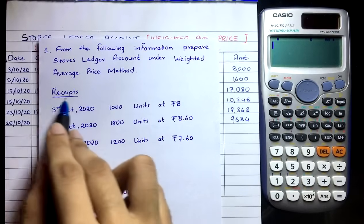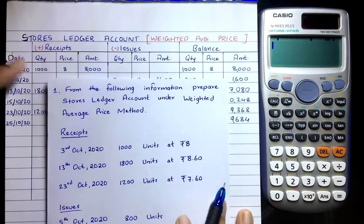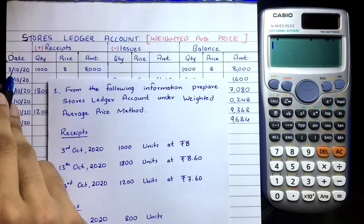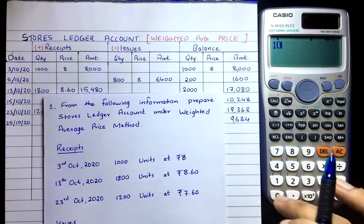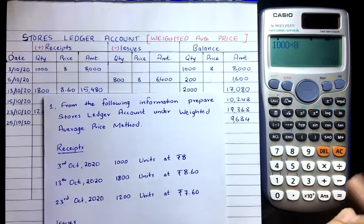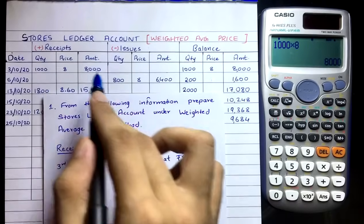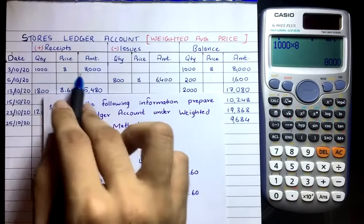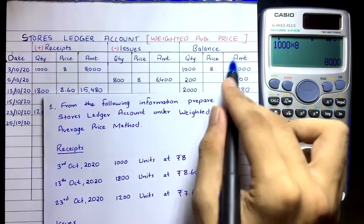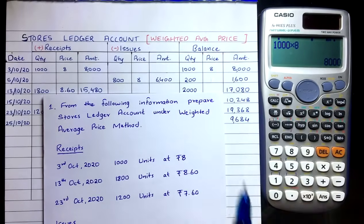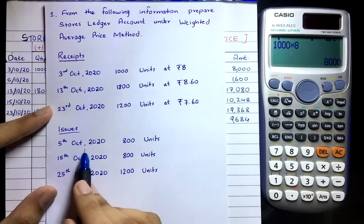The first transaction is on 3rd October 2020 — a receipt of 1,000 units at price ₹8. Enter this in the receipts column. The cost is 1,000 × 8 = ₹8,000. Copy that into the balance column: you now have 1,000 quantity costing ₹8,000 in your warehouse.